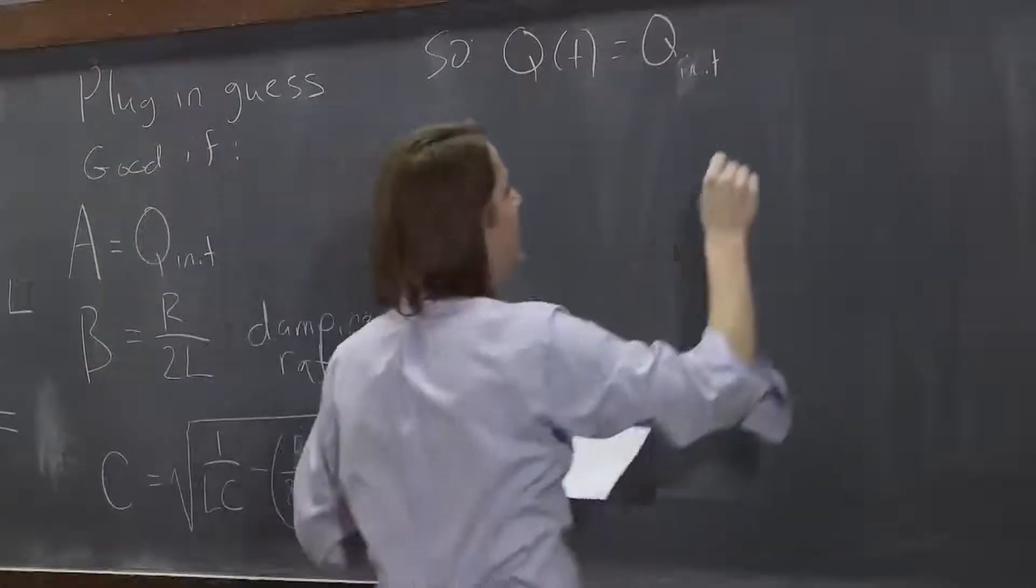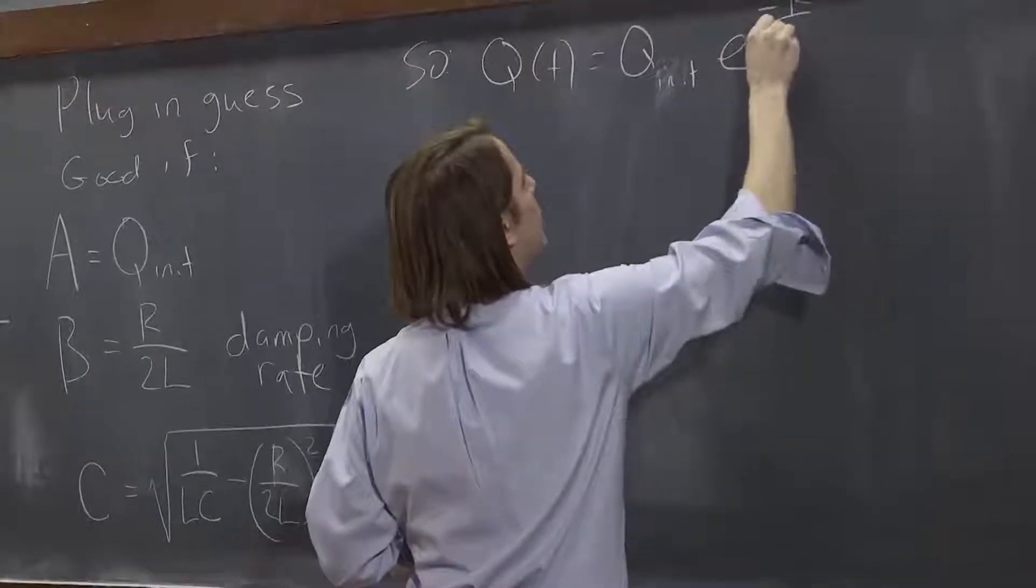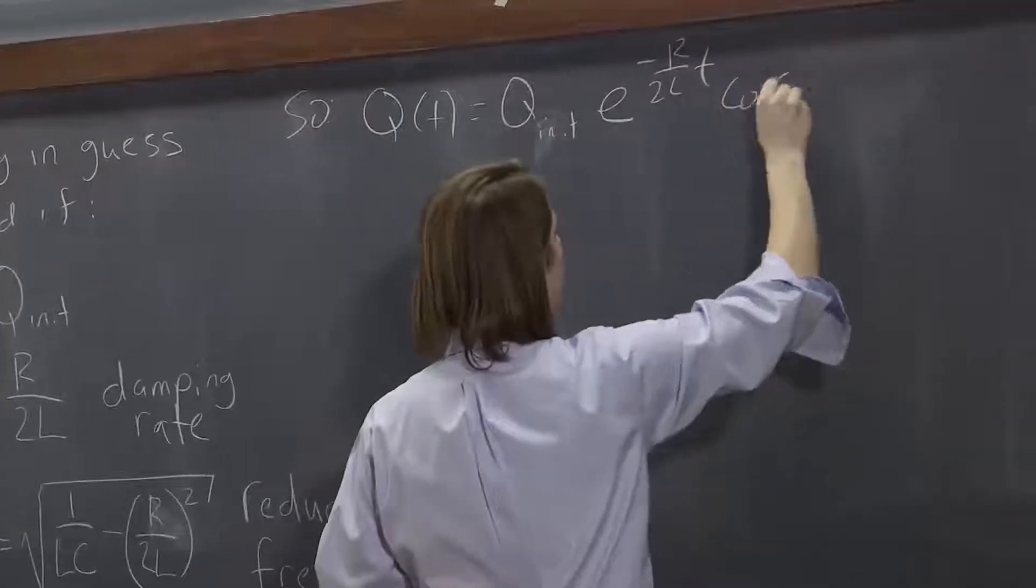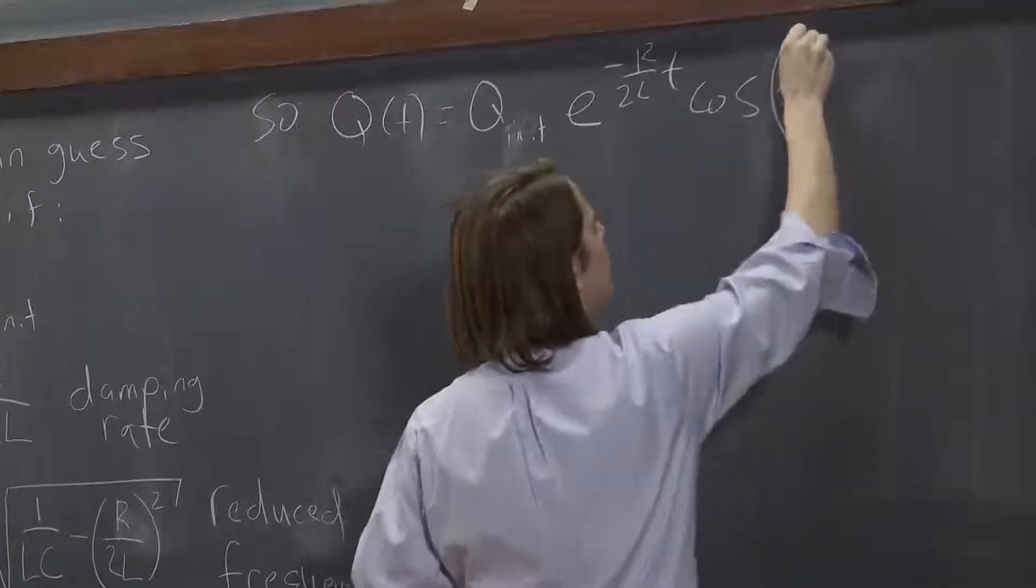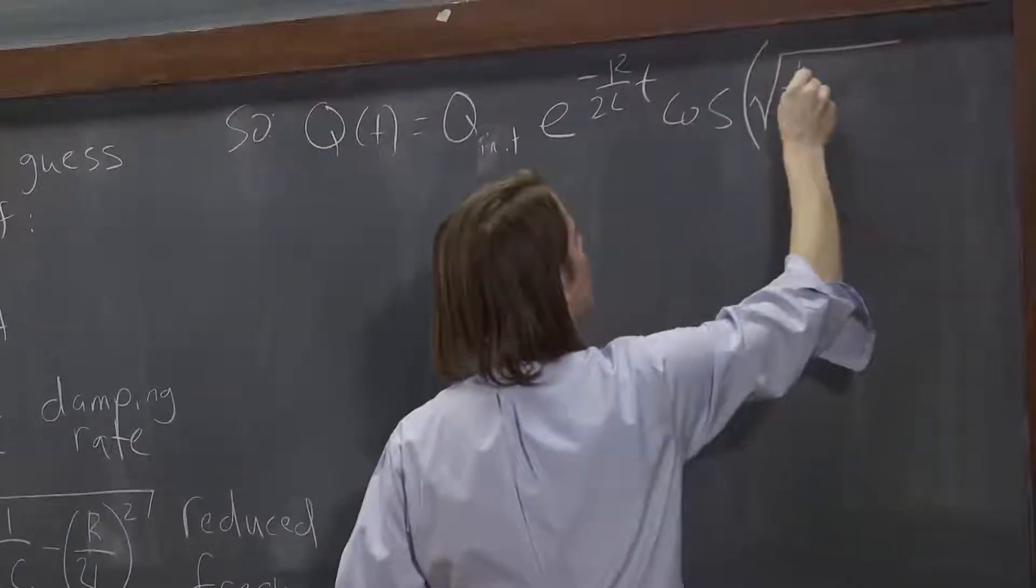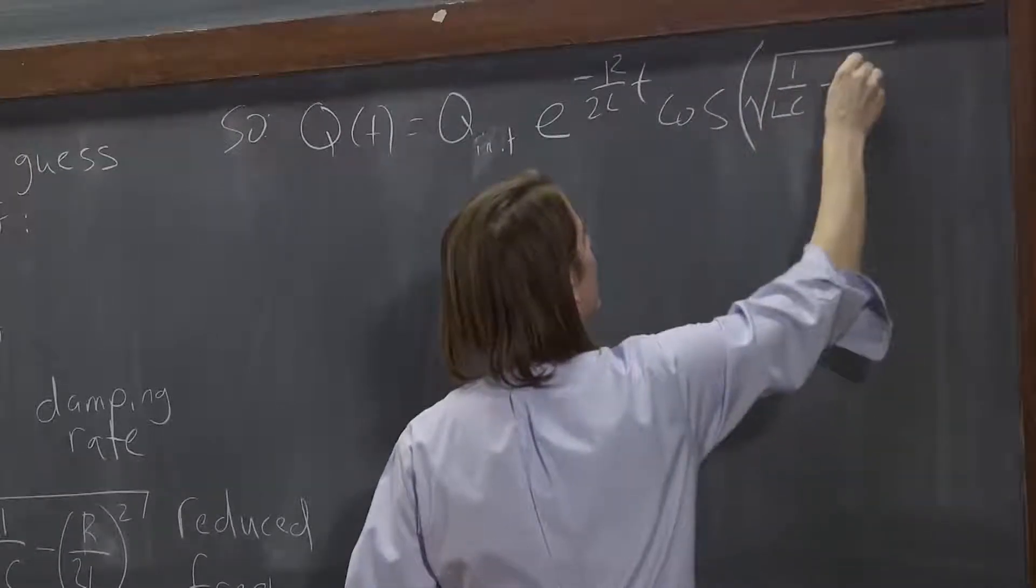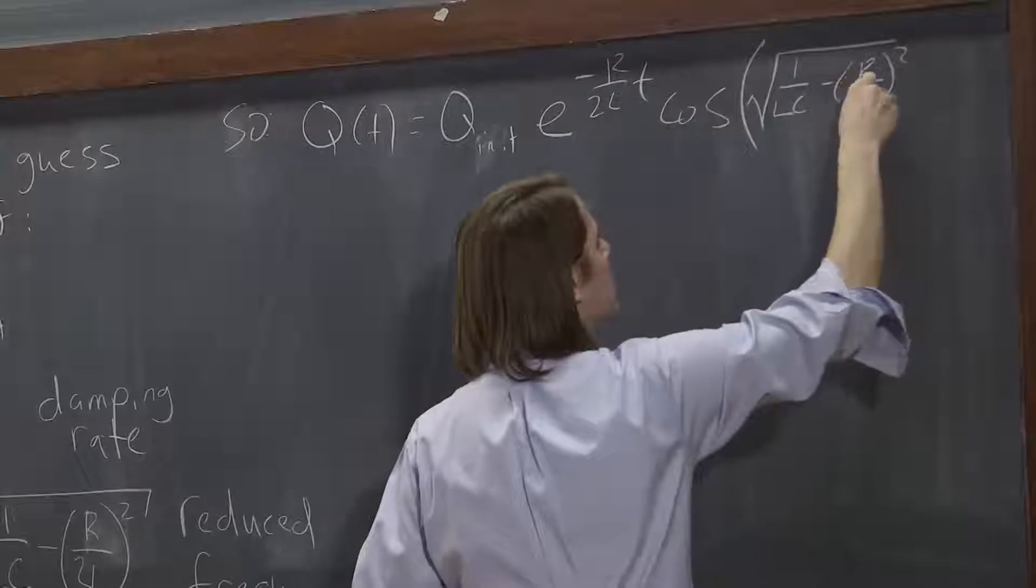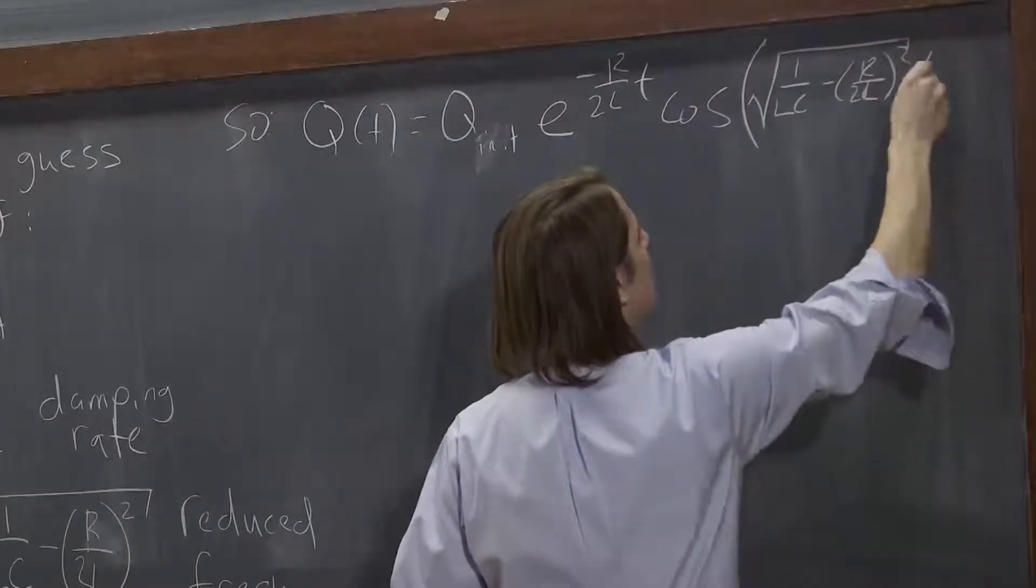You could call it Q max as well, because it's the highest charge you'll get. E to the minus R over 2LT cosine the square root of 1 over LC minus R over 2L squared T.